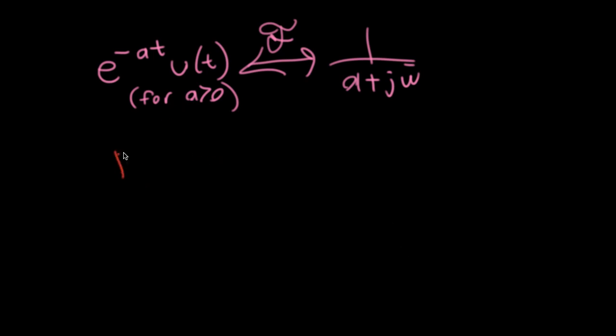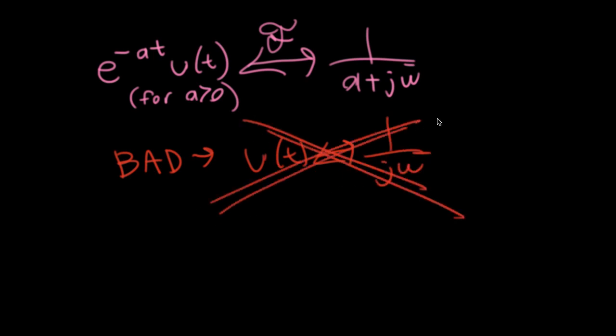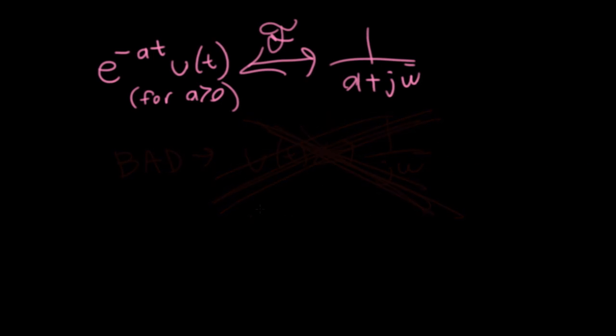I'm going to use the bad color to indicate this. You can't plug in zero here. You can't just say, oh, well, I'll plug in zero for a and say that the Fourier transform of the unit step function is one over j omega. This does not work.